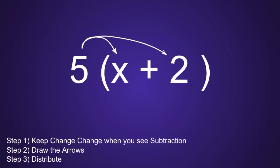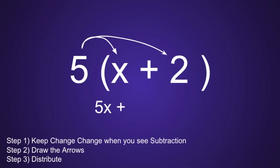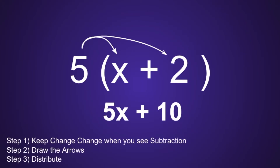That is the most common mistake. And then finally, step 3 is to distribute. So we are going to multiply that 5 by both of the terms inside the parentheses. First we have 5 times x, and 5 times x is equal to 5x. Next we have 5 times 2, and 5 times 2 is equal to 10. So our simplified expression would be 5x plus 10.